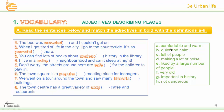The definitions are: A — comfortable and warm; B — quiet and calm; C — full of people; D — making a lot of noise; E — liked by a large number of people; F — very old; G — important in history; H — not dangerous.